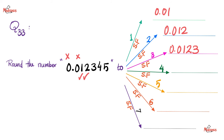How about four significant figures? Zero does not count, zero does not count — start counting: 1, 2, 3, and 4. Look at the digit after: it's a 5. So it becomes a 5 if you're using the 5-4 rule, or you can leave it as a 4 if you're using the even rule. Ask your teacher. So the answer could be 0.01235 or 0.01234 — both answers are correct depending on the methodology.